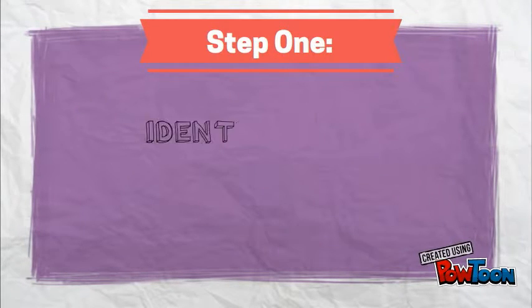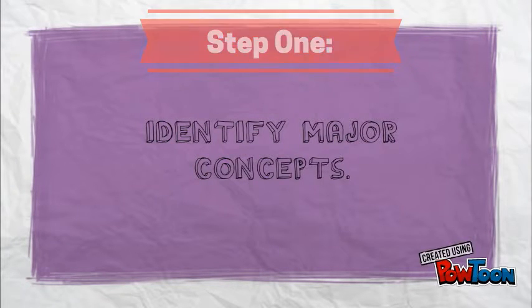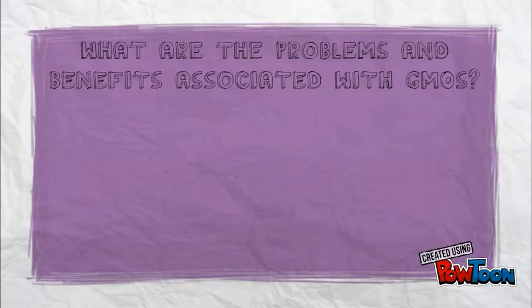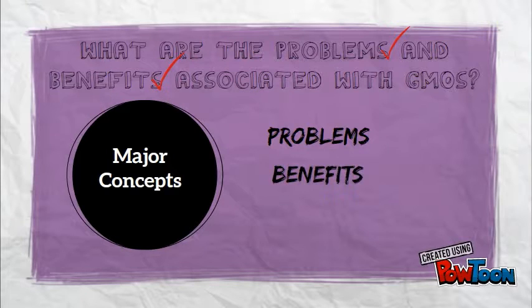My first step is to identify the major concepts of my research question. The most important concepts, or the major concepts from my research question, are problems, benefits, and GMOs.